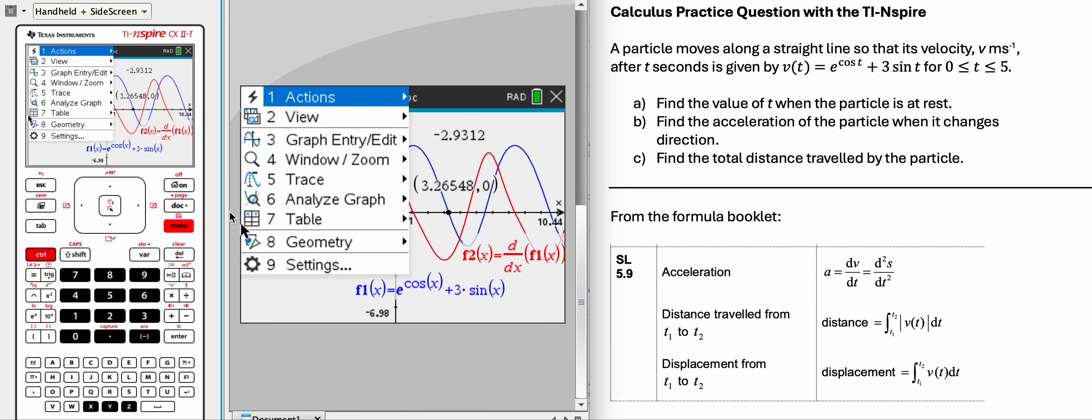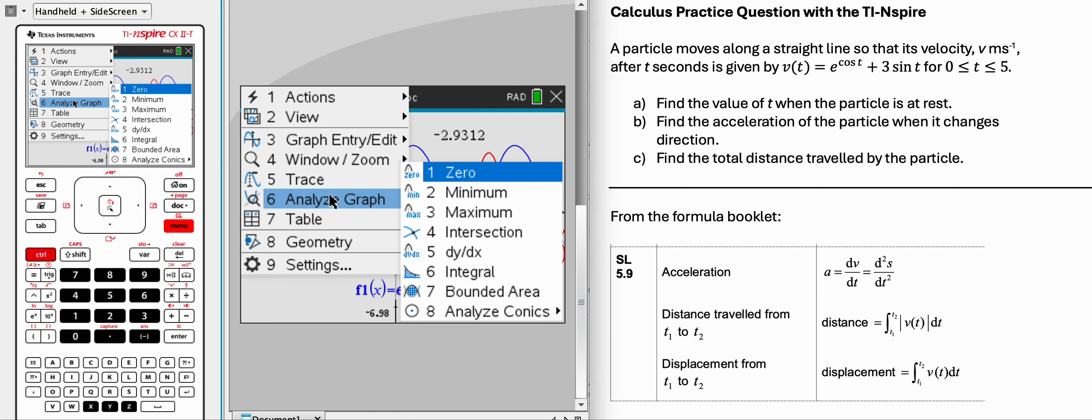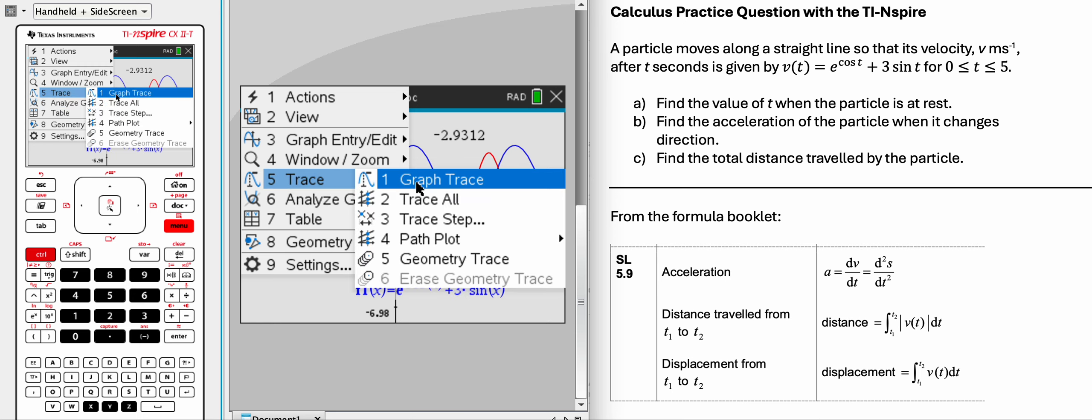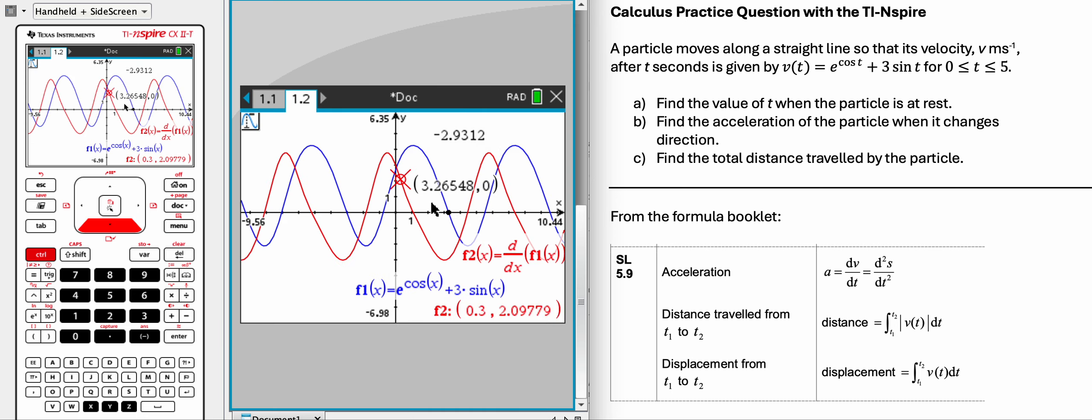So we can go to menu, analyze graph, and, oh, sorry, trace. And we can just press up or down to switch which curve we're looking at. We're looking at the red one, and then simply just type in this number, 3.265.